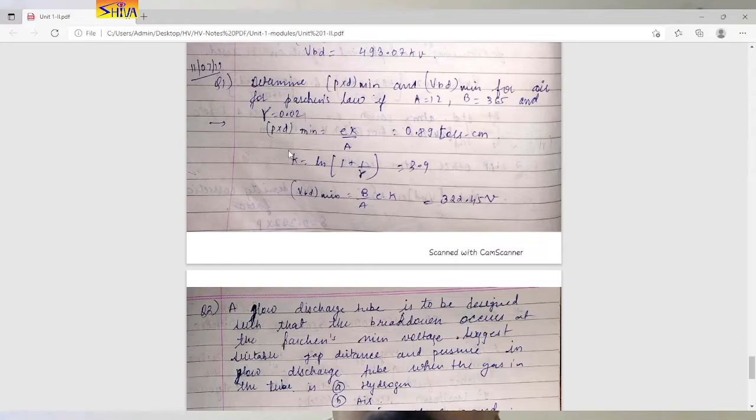So we have equations. First we use this equation: k is ln in bracket 1 plus 1 by gamma. So gamma is given, it is 0.02. By substituting this value we get k is 3.9.